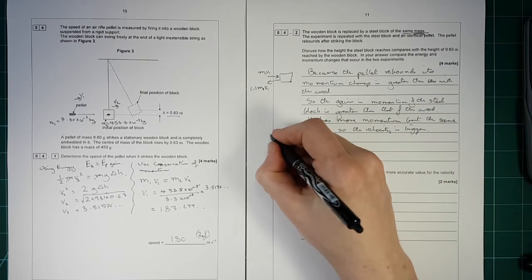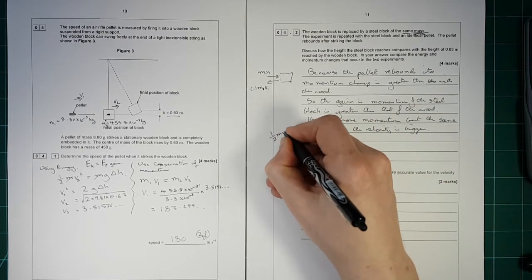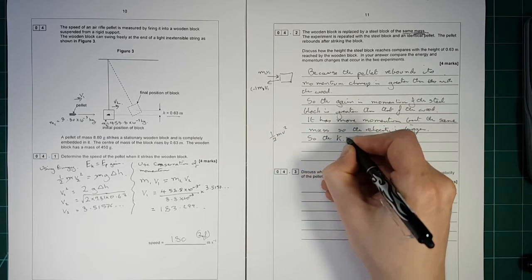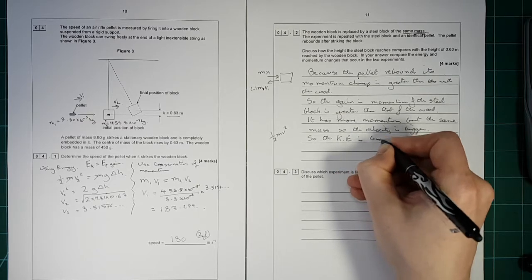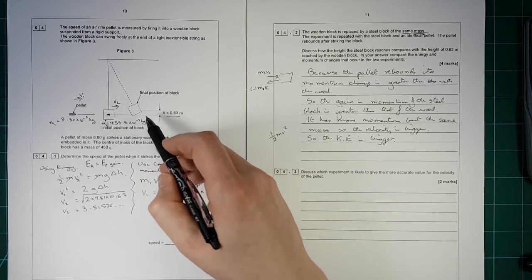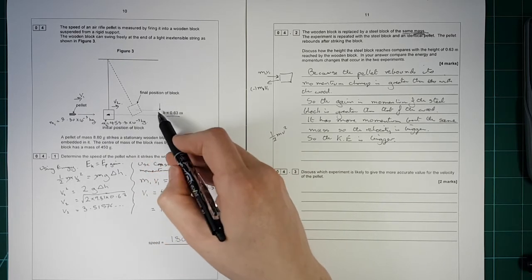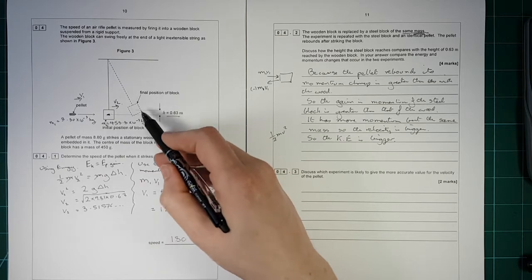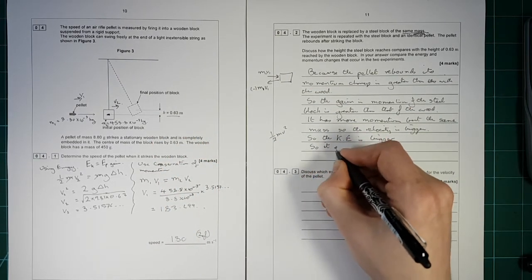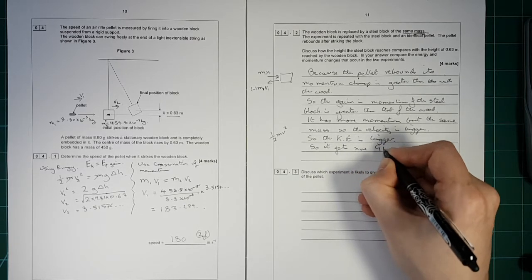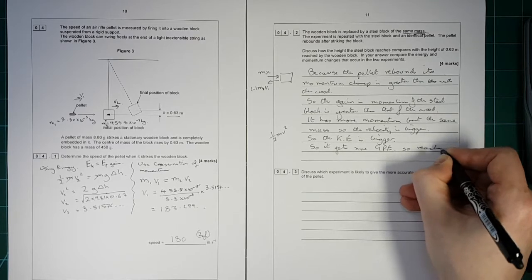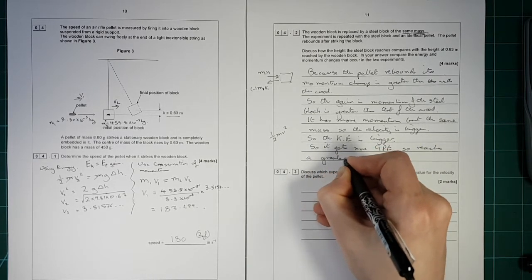Okay. If its velocity is bigger, kinetic energy is half mv squared. So the kinetic energy is bigger. So if its kinetic energy was bigger here, then it will get to a greater height, because it means it will get a higher gravitational potential energy. So it gets more GPE, so it reaches a greater height.